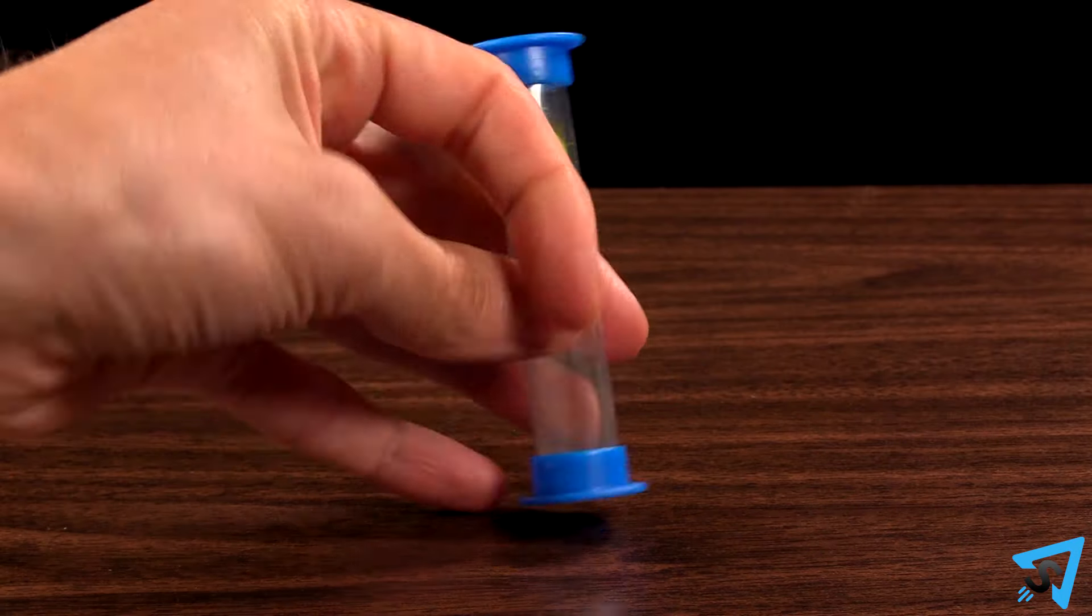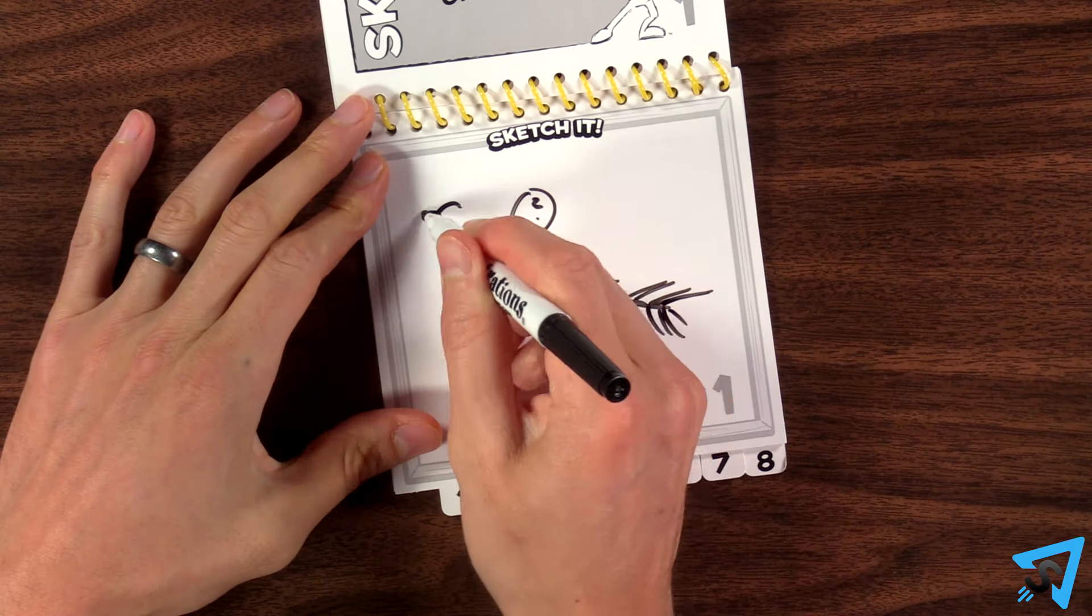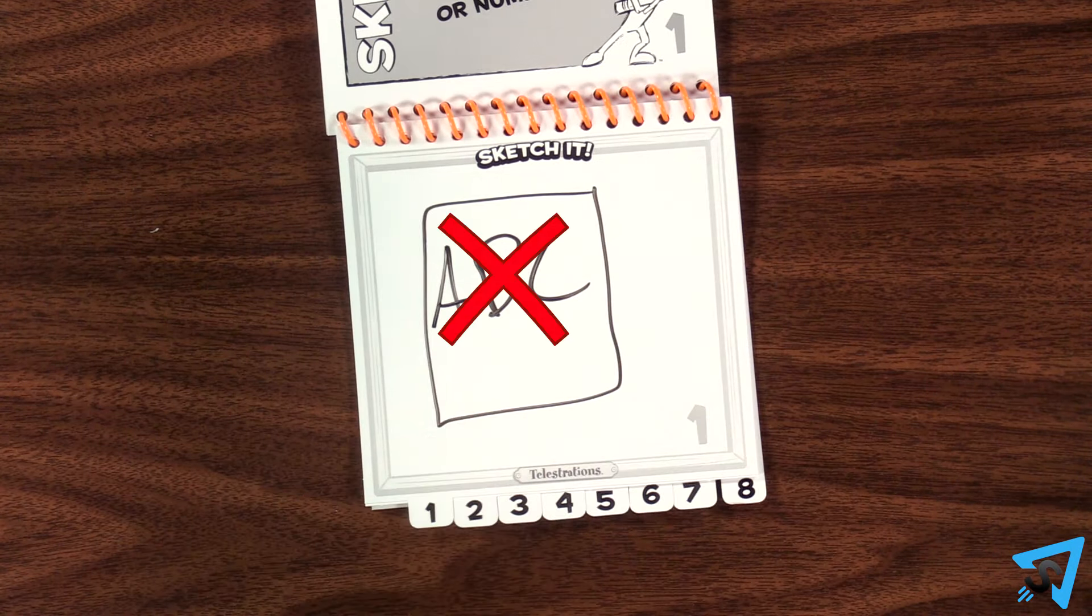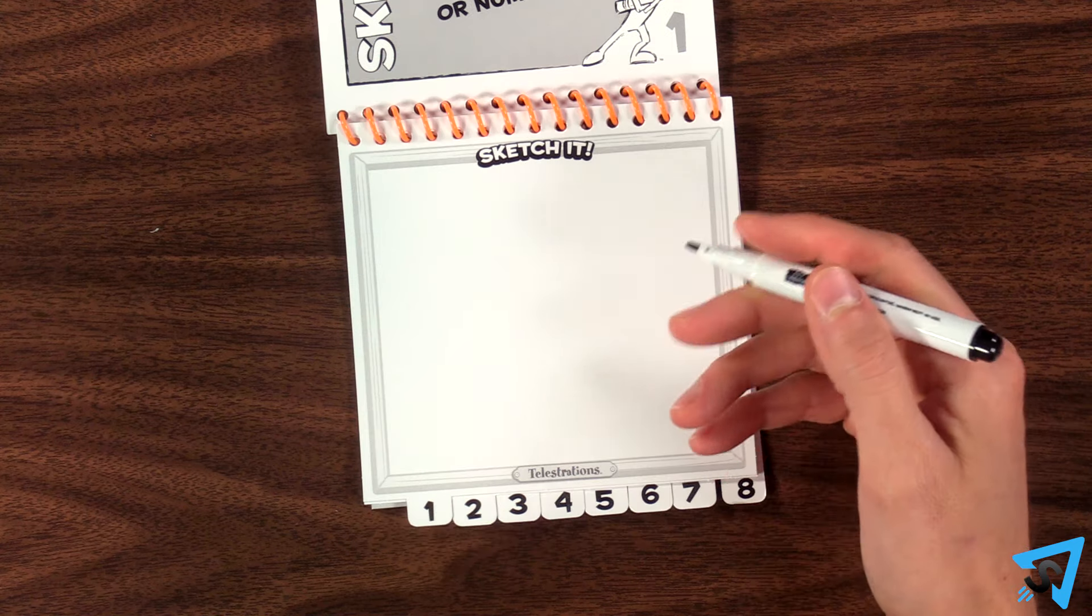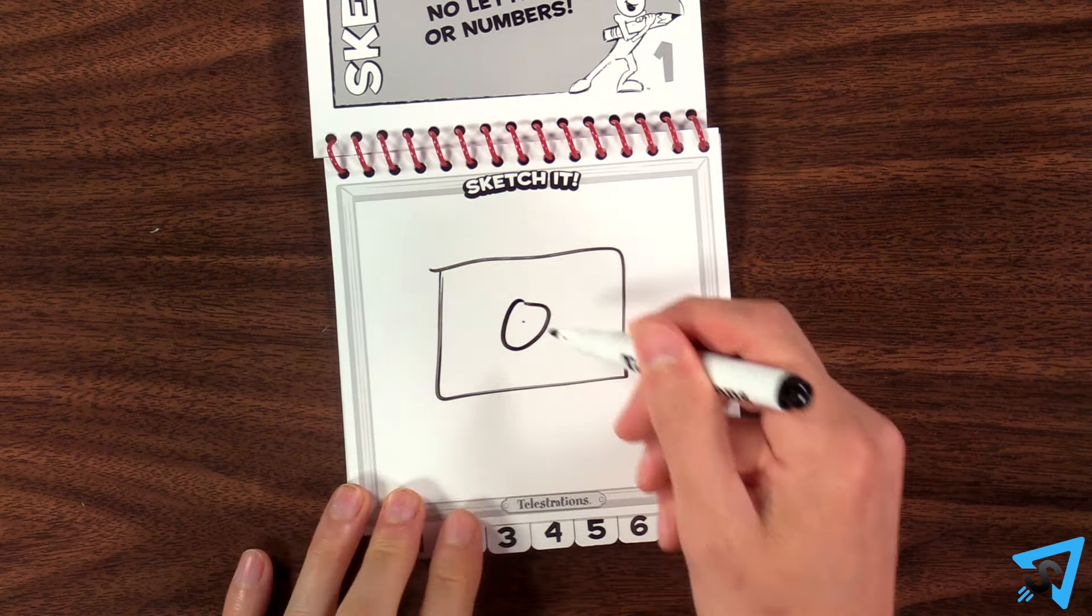When everyone is ready, flip the timer. Everyone draws the word on their book. You may not use letters or numbers or leave the page blank. You must draw something.